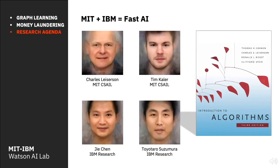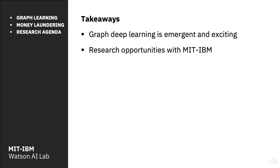One of the exciting aspects is the team. This MIT-IBM partnership creates really interesting opportunities. We're working with Charles Leiserson's high-performance computing group, my colleagues Jie Chen and Tengfei Ma, as well as Toyotaro Suzumura, who has deep domain expertise working with client banks in this space. To wrap up: graph deep learning is emergent and exciting especially for financial applications. We would love domain expertise and data partners so that we can make things that really make a difference.